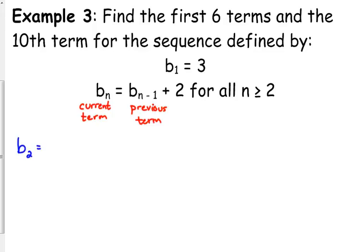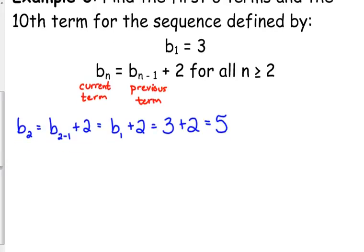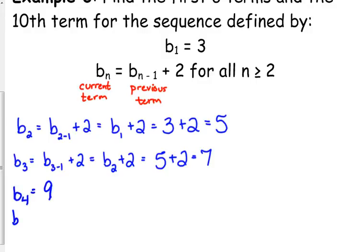Alright, so b sub 2 is equal to, I'm replacing all the n's with 2. So 2 minus 1 is 1, b sub 1 is 3, so 3 plus 2 is 5. I'm just trying to show you how this notation works here. So b sub 3 is equal to b sub 3 minus 1 plus 2, 3 minus 1 is 2, b sub 2, we just found it, it was 5, so that gives us 7. I think you're starting to see the pattern, every single time we're just adding 2. So then b sub 4 is going to be 9, b sub 5 would be 11, b sub 6 would be 13.